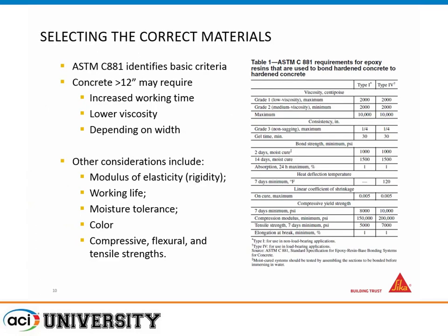The other governing document for material selection, referenced in both RAP documents, is ASTM C881. C881 is a fairly large ASTM test document that determines what type of epoxy is good for what applications. For crack repair, it's typically hardened-to-hardened concrete, though there are functions of C881 for fresh-to-hardened concrete or non-structural applications. It considers modulus of elasticity — the rigidity of the epoxy — working life, moisture tolerance, and color if necessary.